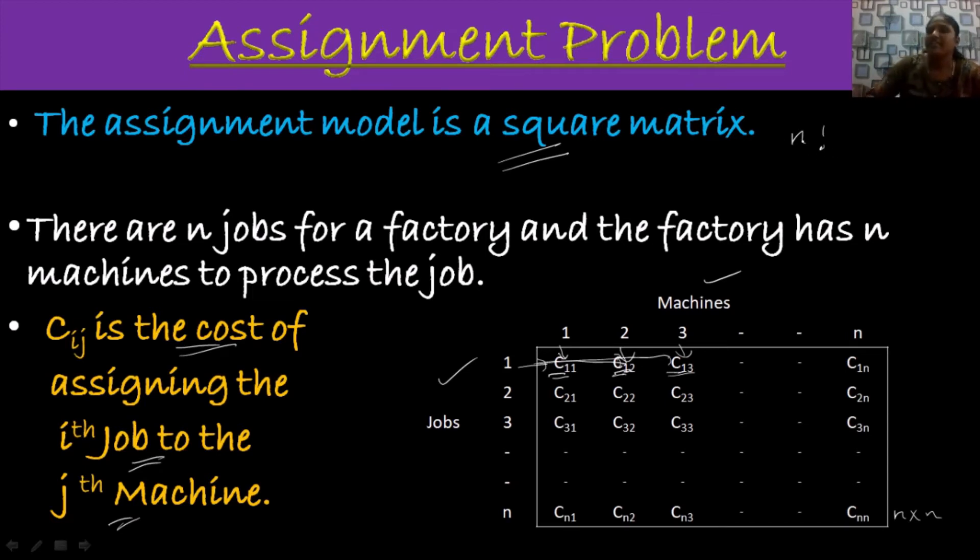For example, let me take N is equal to 3. Suppose if it is a 3 by 3 matrix, so totally we are having 3 factorial ways of assigning assignment. That is, 3 factorial is 3, 2, 1. That is, totally we have 6. So totally we are having 6 possible ways for making assignments.